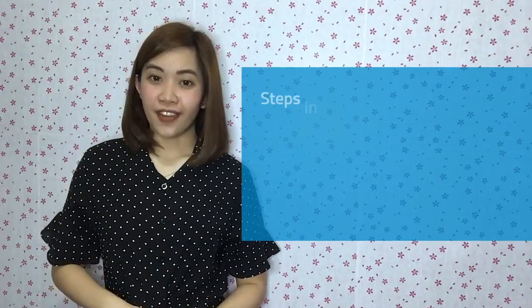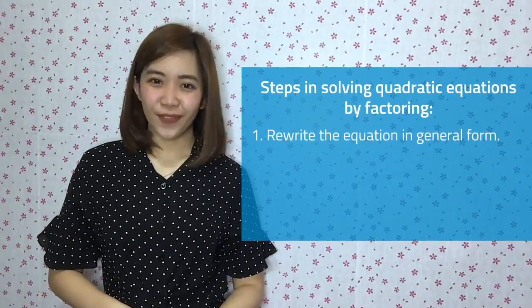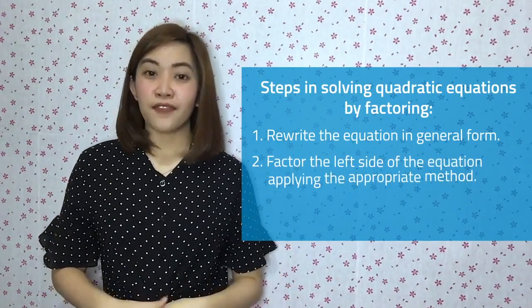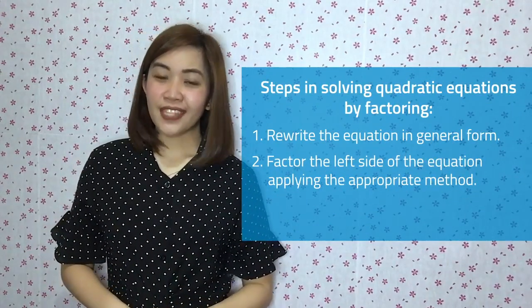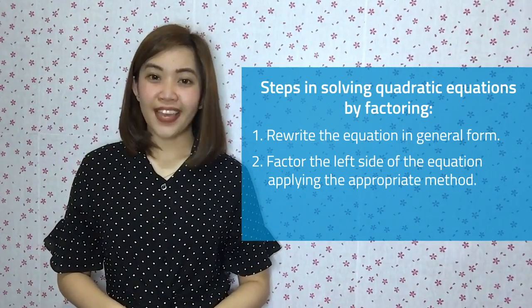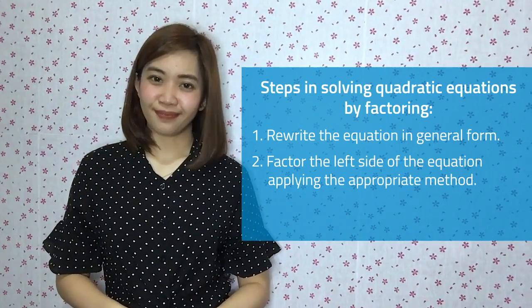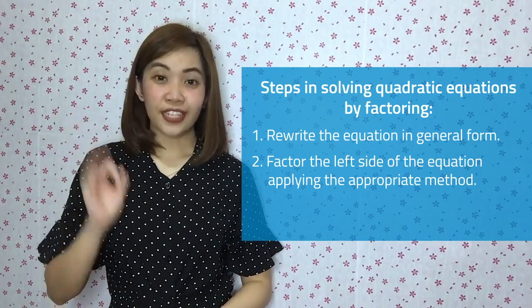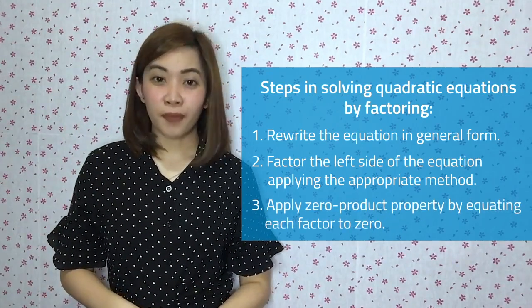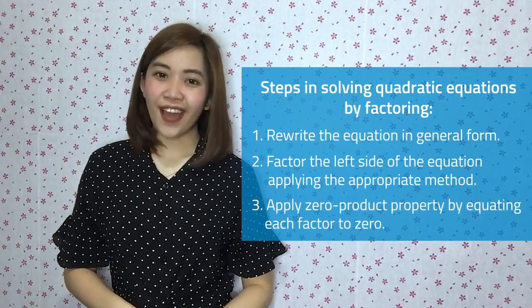Here are the steps in solving quadratic equations by factoring. First, rewrite the equation in general form. Second, factor the left side of the equation applying the appropriate method. Third, apply the zero product property by equating each factor to zero. Let's try some examples.